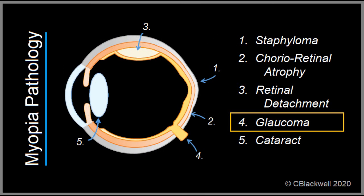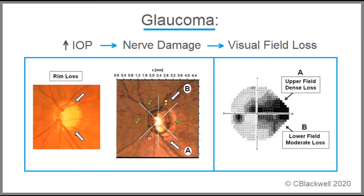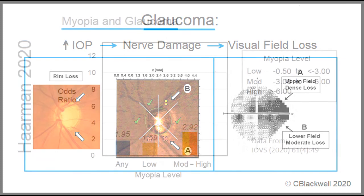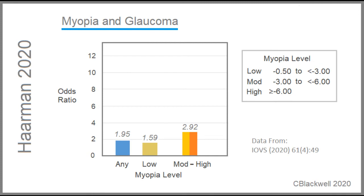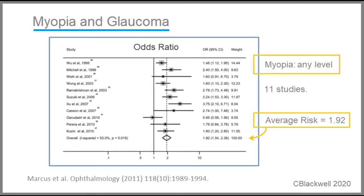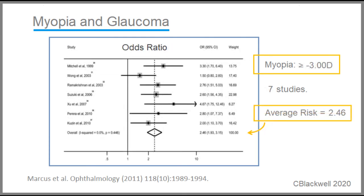We have reached our last complication: glaucoma. In general, glaucoma means there is a characteristic pattern of damage to the optic nerve, related to relatively elevated intraocular pressure. The Harman odds ratios show low myopia has a modest increase in risk, while moderate and high myopia combined show an almost three times risk. In a separate meta-analysis, Marcus shows the range of risk associated with glaucoma: while one study shows no risk, the other ten all show risks with an average approaching two — meaning any myopia doubles the risk of developing glaucoma. If you look at higher myopia greater than three diopters, the average risk increases to nearly two and a half times.